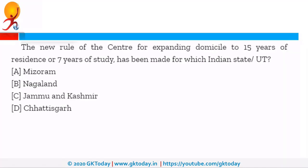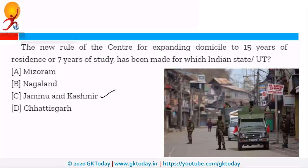The new rule of the center for expanding domicile to 15 years of residence or 7 years of study has been made for which Indian state or union territory? It is for the union territory of Jammu and Kashmir. As per the new rule, a person who has resided in Jammu and Kashmir for at least 15 years will be eligible to be a domicile of the union territory. Apart from that, a person who has studied for 7 years and appeared in Class 10 or Class 12 examinations in an educational institution based in the union territory will also be eligible.